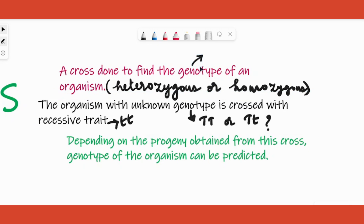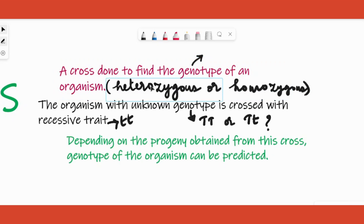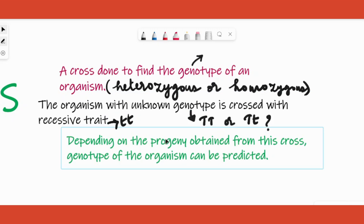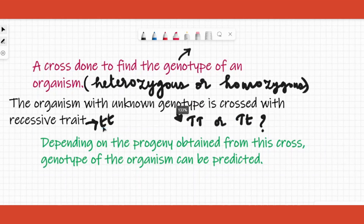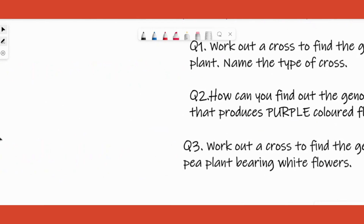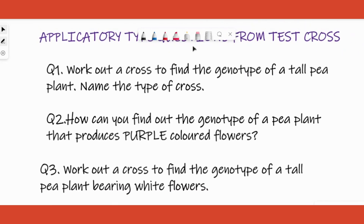What you need to determine is whether the genotype of the unknown organism is heterozygous dominant or homozygous dominant. To find that out, you cross it with a recessive trait. For example, taking tall and dwarf — a tall plant could be homozygous dominant or heterozygous dominant. Let's go directly into the questions to understand it better.